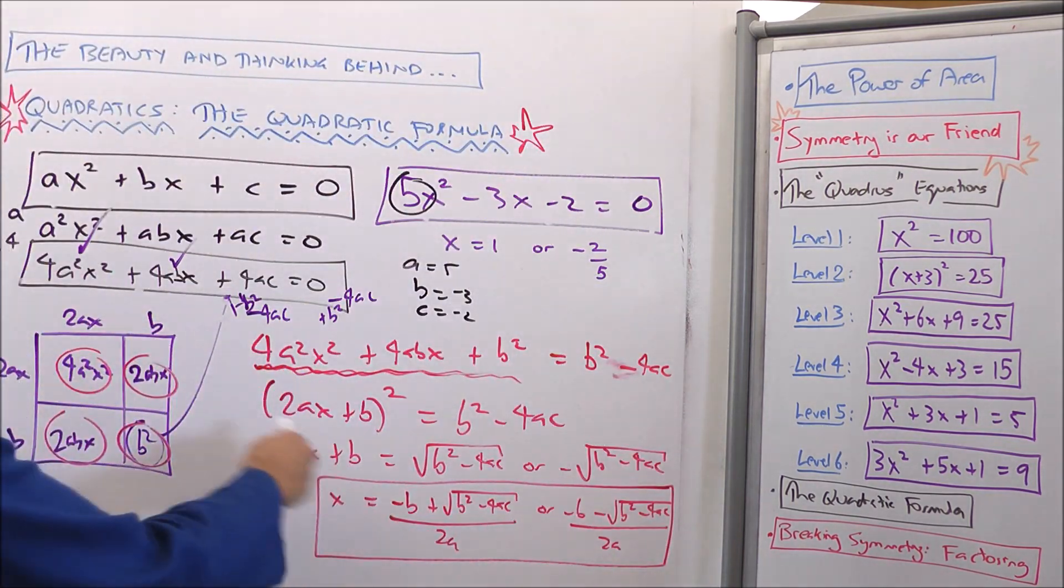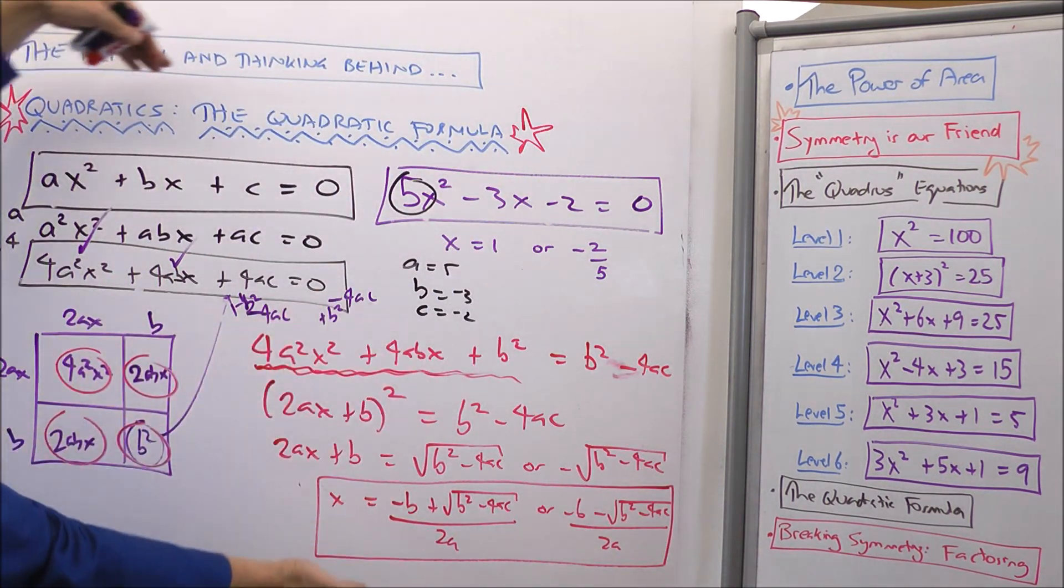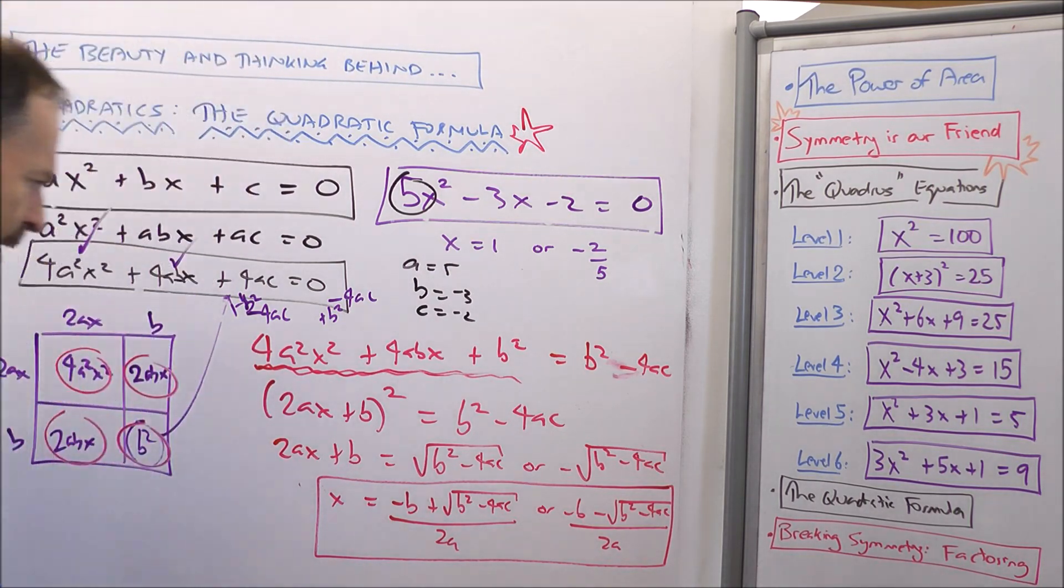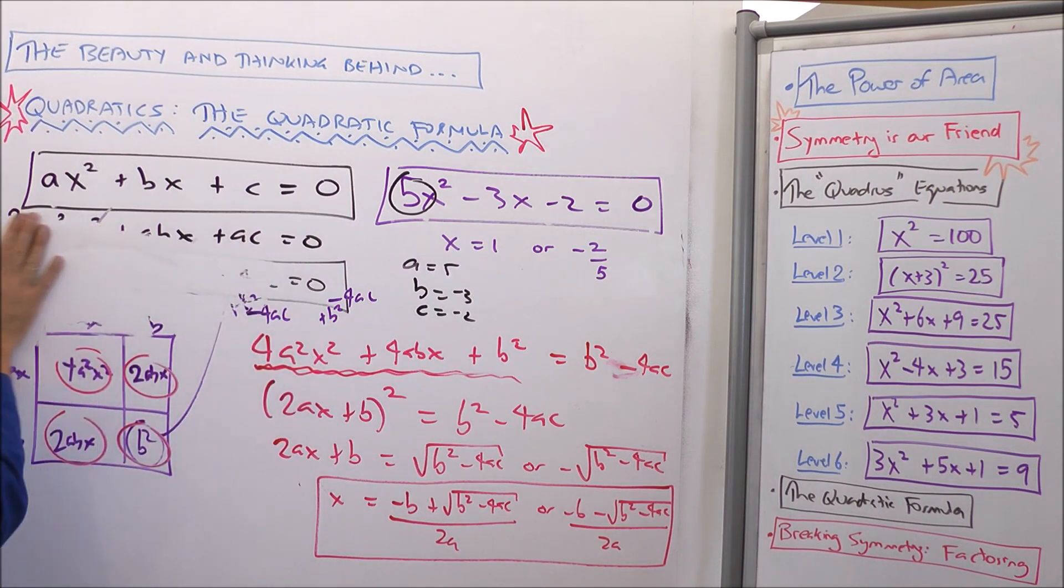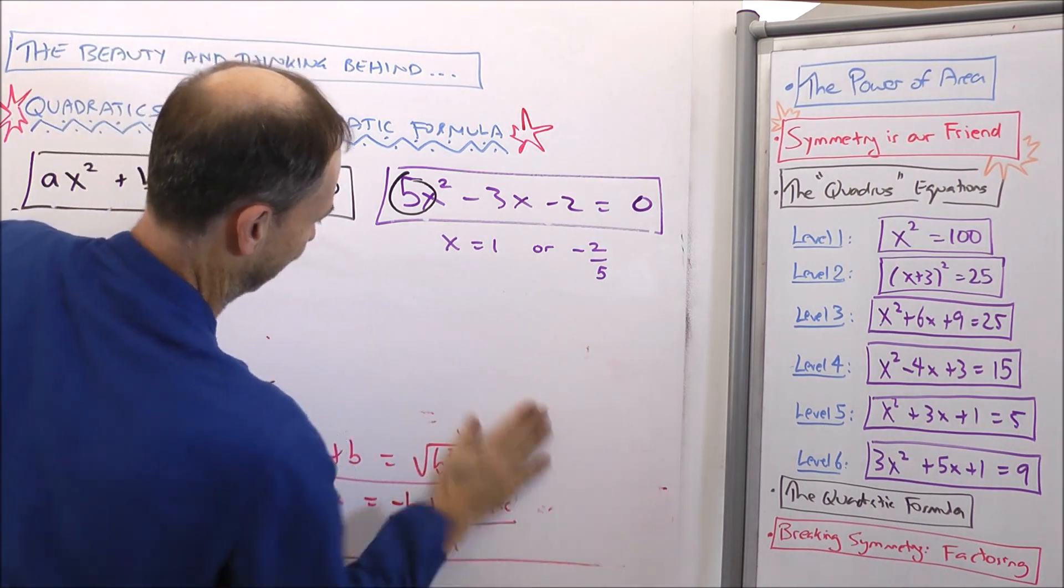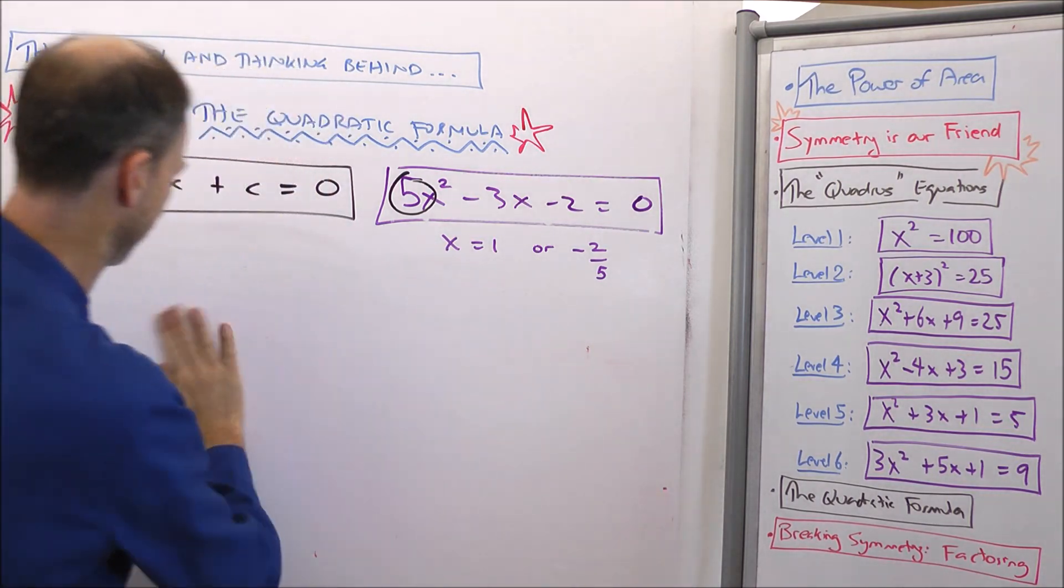Negative b plus the square root of b squared minus 4ac all over 2a or negative b minus the square root of b squared minus 4ac all over 2a. Whoa. But my point is, do you see, even though it's more abstract and looks scarier, it's exactly the same method as this. We've been doing the quadratic formula all along.